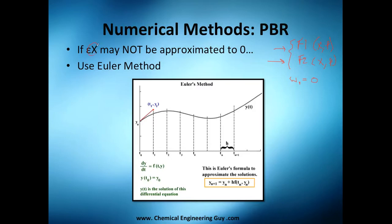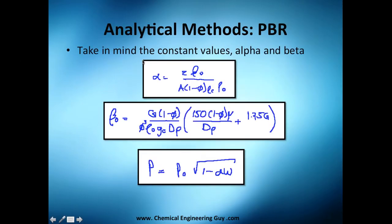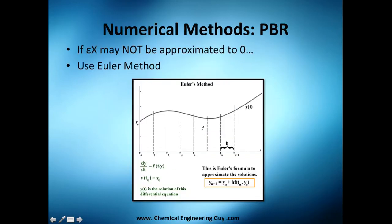If you cannot approximate this one to zero, then you will not be able to do the analytical method we've seen before. You will not be able to get this part right here. So what do you do in that case?